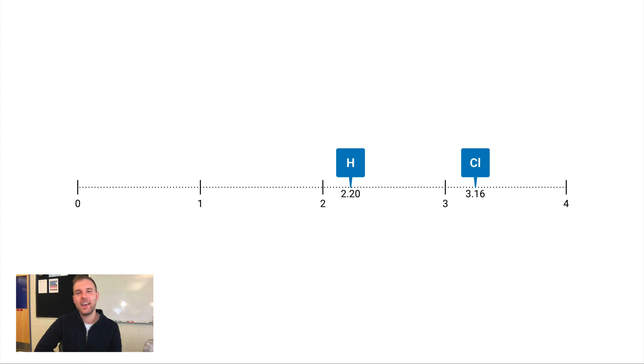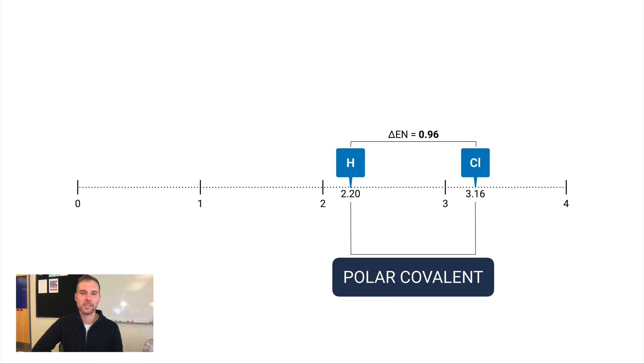That 3.16 electronegativity value tells it all—it pretty much wants one more electron, and hydrogen has got one. In this scenario here, the difference in electronegativity is 0.96. That's a little bigger. That falls out of that zero to 0.4 range, and so this difference would be classified as a polar covalent bond.